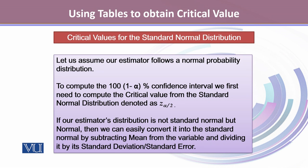If our estimator's distribution is not standard normal but normal, we can easily convert it into the standard normal by subtracting mean from the variable and dividing it by its standard deviation or standard error.